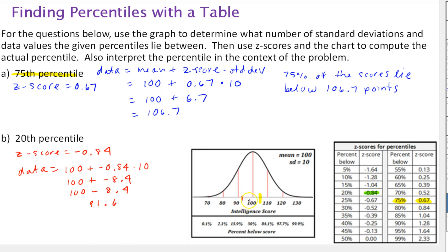And that looks like basically where we approximated it. So now let's interpret this. 20% of the scores lie below 91.6 points.